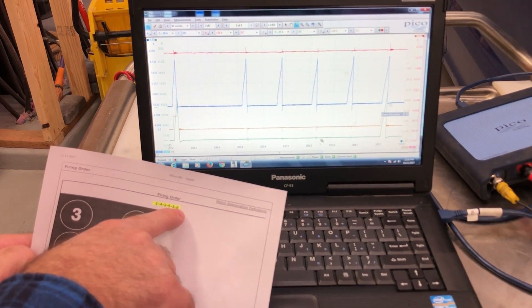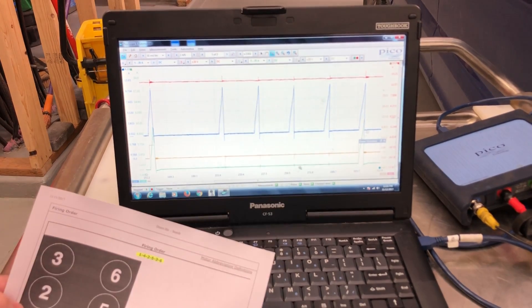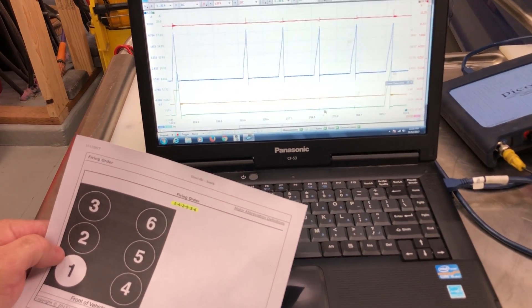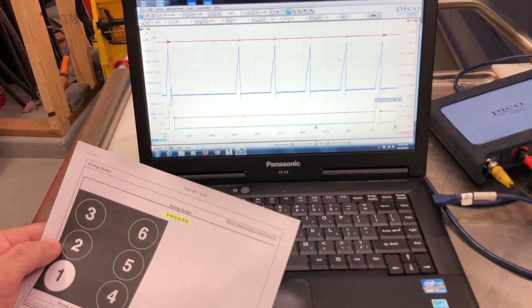And our firing order is one, four, two, five, three, six. So it's one—four is missing—and the rest are there. So our problem would be on cylinder number four. And that's how we determine which coil is bad using amperage.